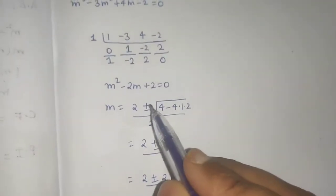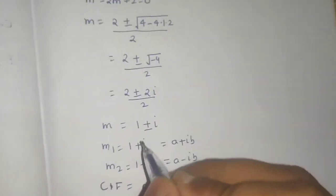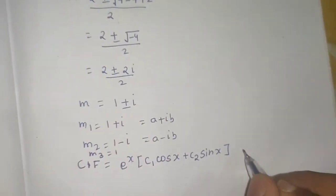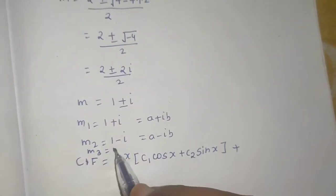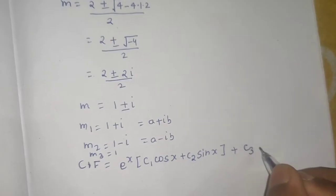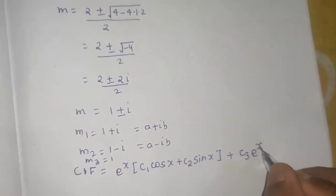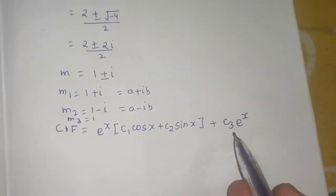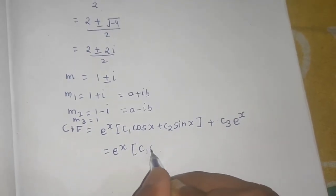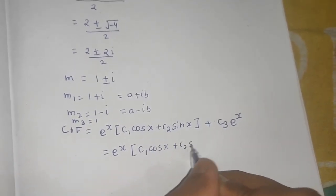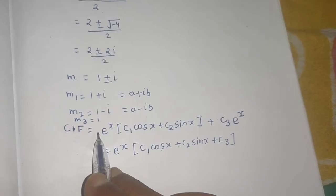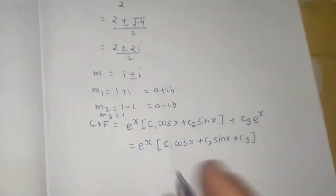Be careful — there are three roots; m = 1 is also a real, distinct root. So we add c₃e^x for that root. Taking e^x common, the full complementary function is e^x(c₁cos x + c₂sin x + c₃).